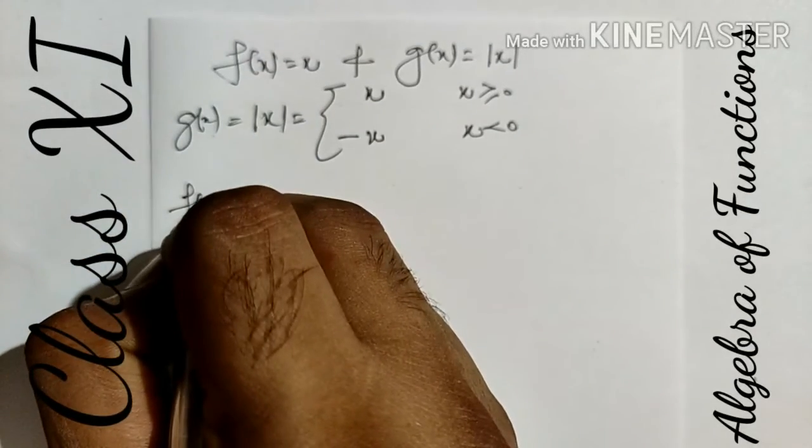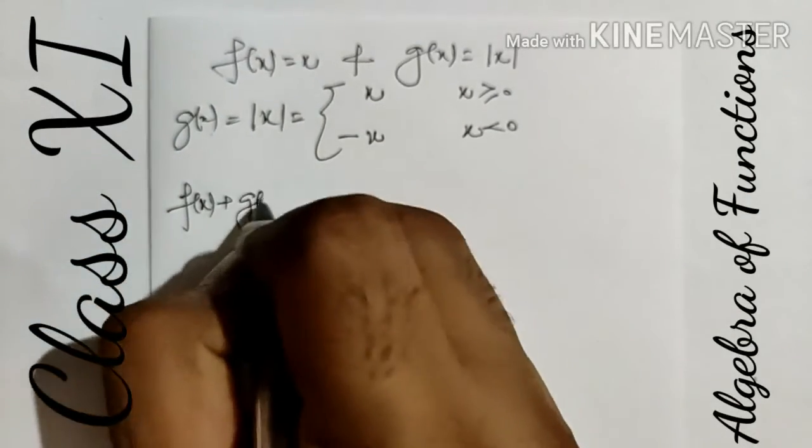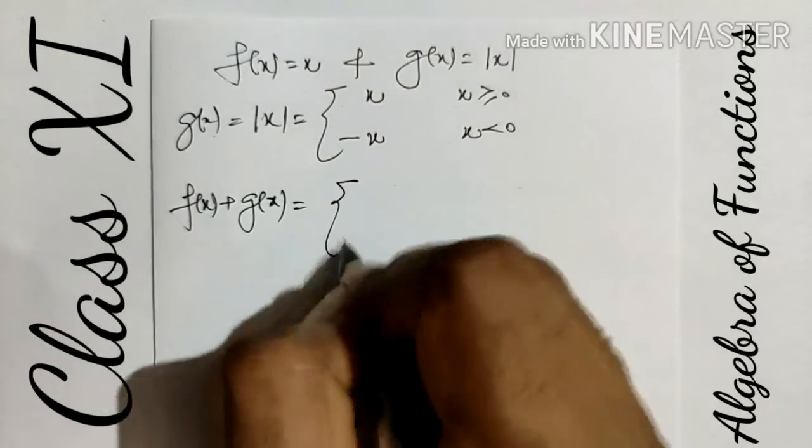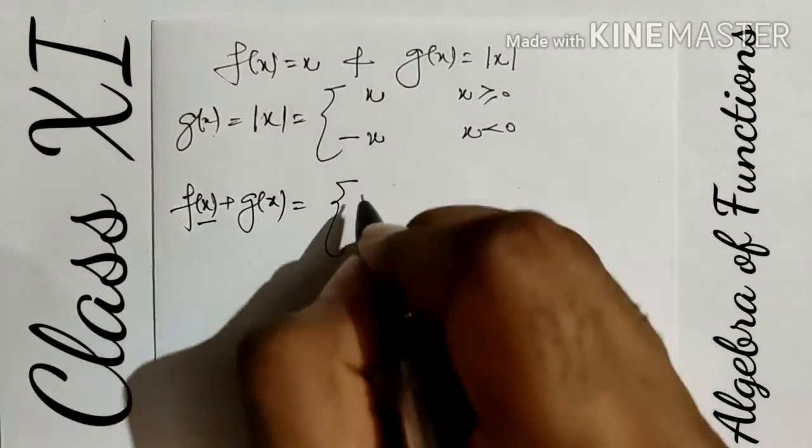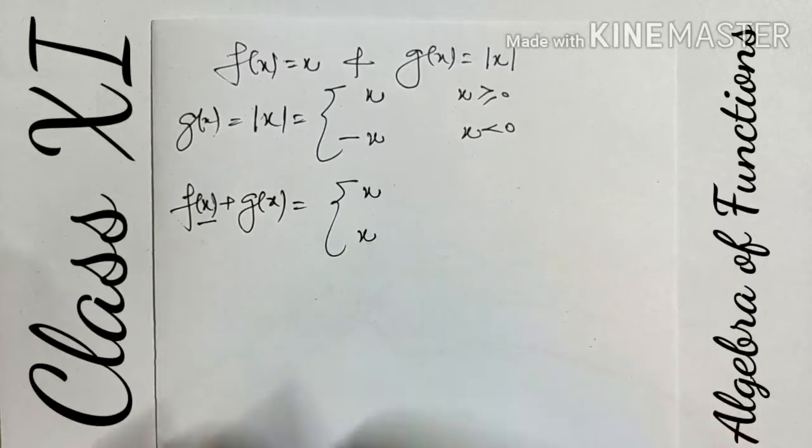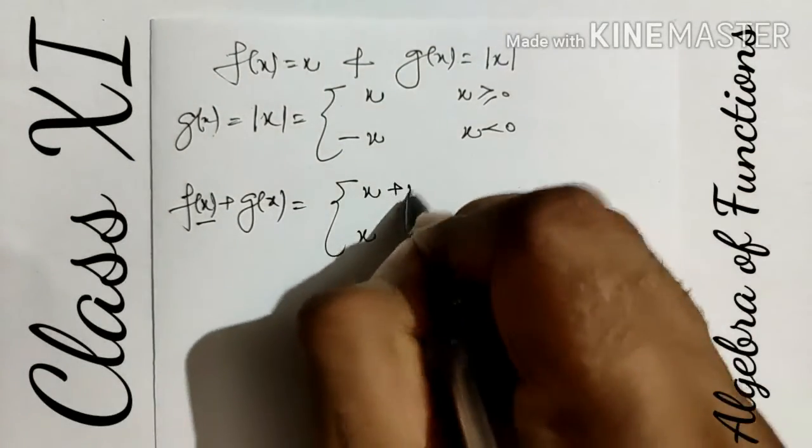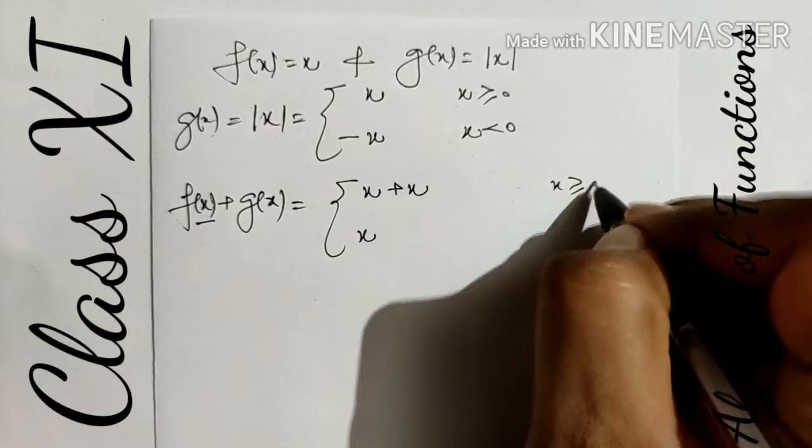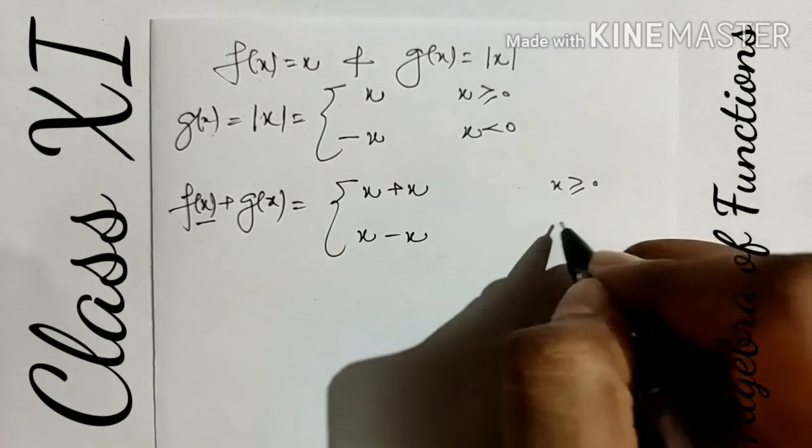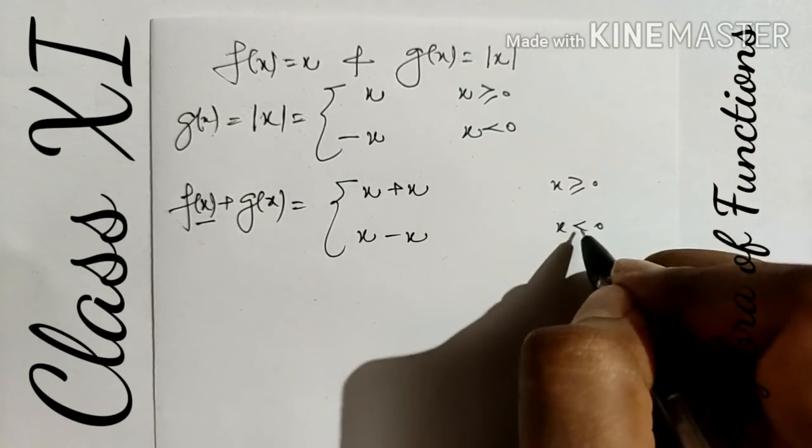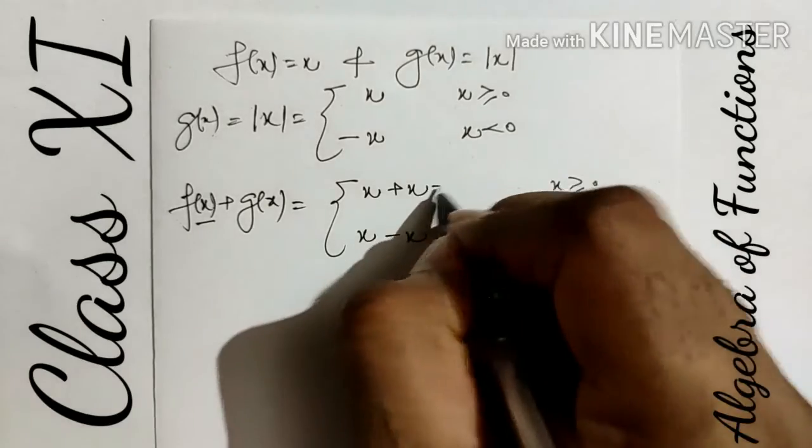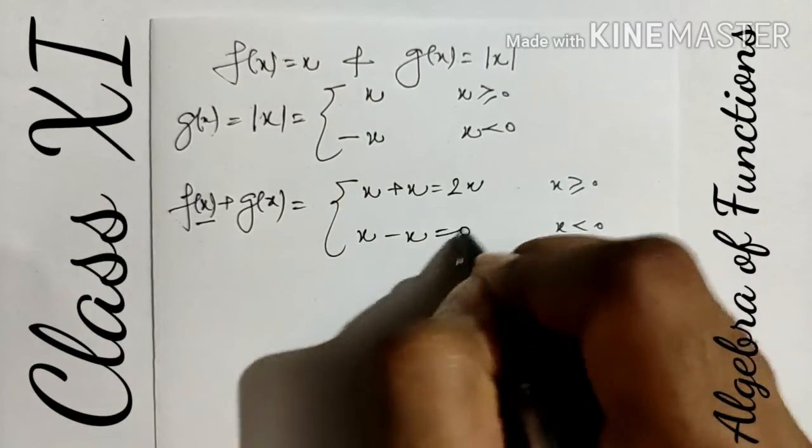We want to calculate first the sum of these two: f(x) + g(x). f(x) is given by x, so it remains the same in both cases. g(x) is positive when x > 0, negative when x < 0. Equality holds in both, so we can show anywhere. This value becomes 2x when x ≥ 0, and 0 when x < 0.